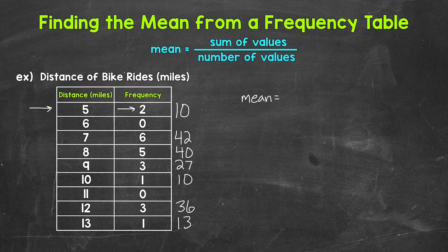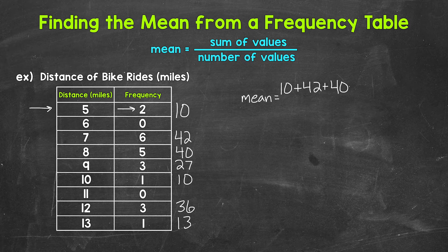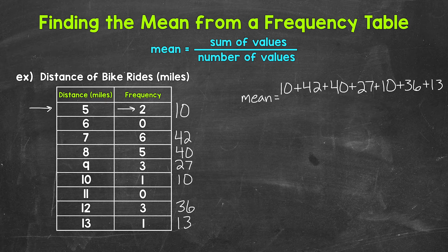Then we can write out an addition problem here. So we have 10 plus 42 plus 40 plus 27 plus 10 plus 36 plus 13. That's going to give us the sum of all of the values — the total number of miles.